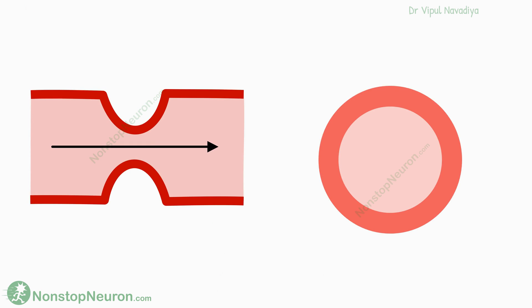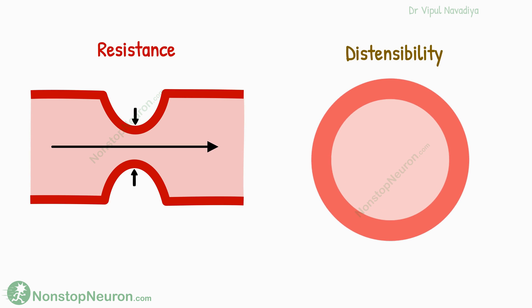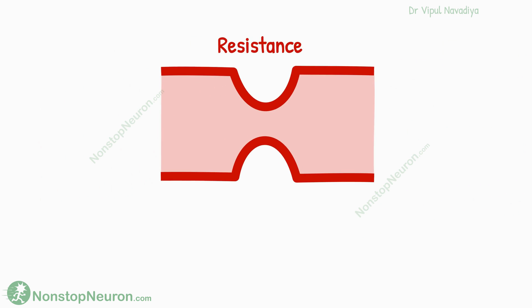The fundamentals are in two different properties of blood vessels—resistance and distensibility. In the video on the resistance of blood vessels, we saw that the resistance is inversely proportional to the radius of the vessel to the fourth power.